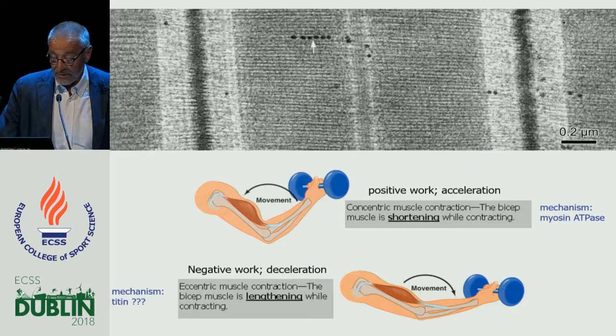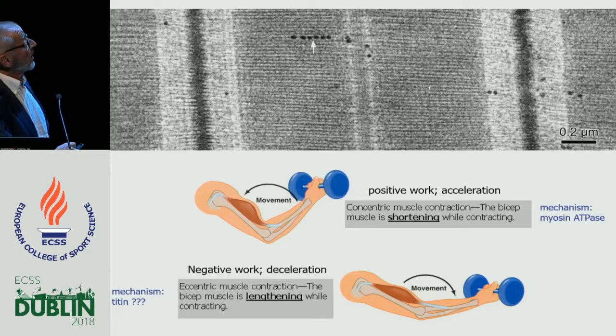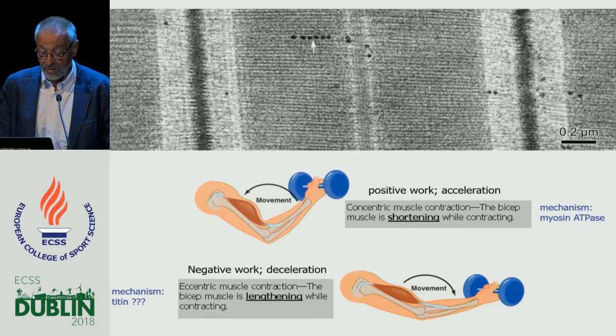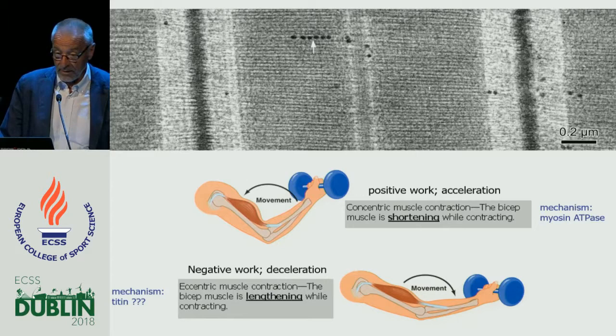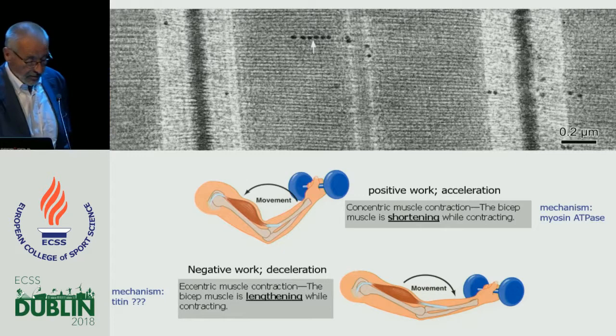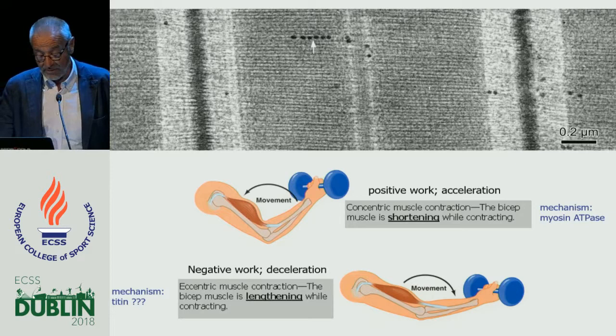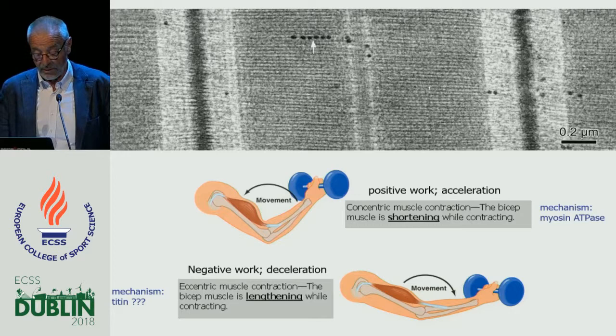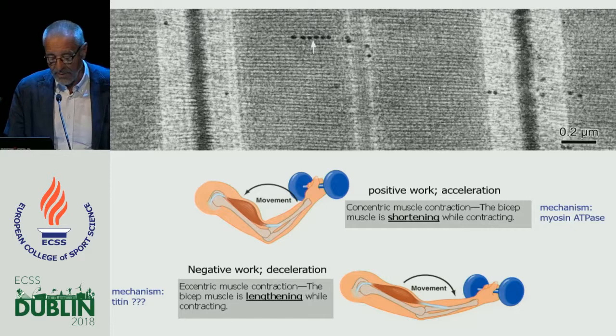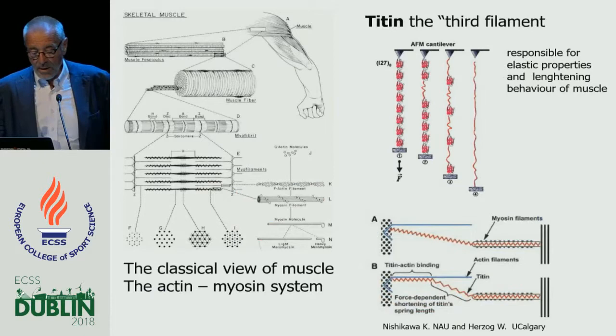Concentric exercise means that your muscle contracts — the sarcomere shortens during activation, so you do positive work or you accelerate, and the mechanism is the myosin ATPase. Whereas when you do negative work during muscle activation, the distance between the Z-lines of the sarcomere gets longer, so you decelerate and the muscle lengthens during the time it is active.